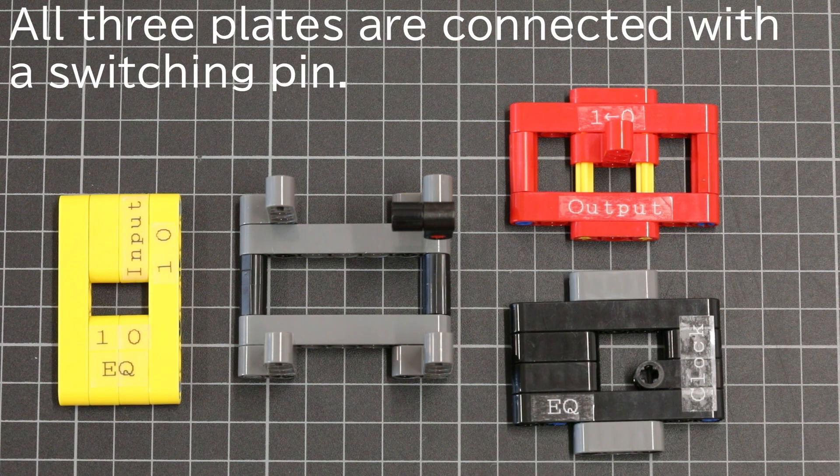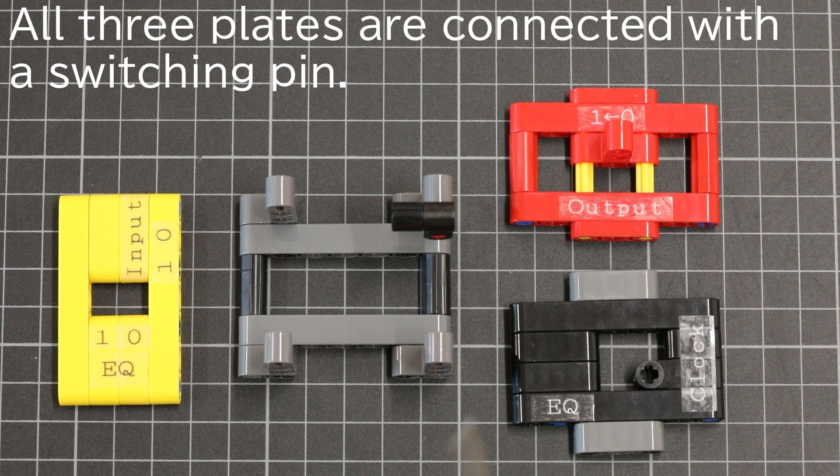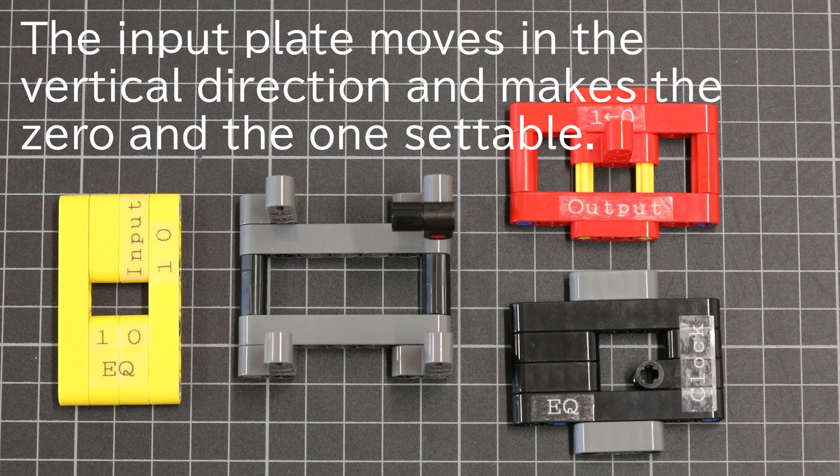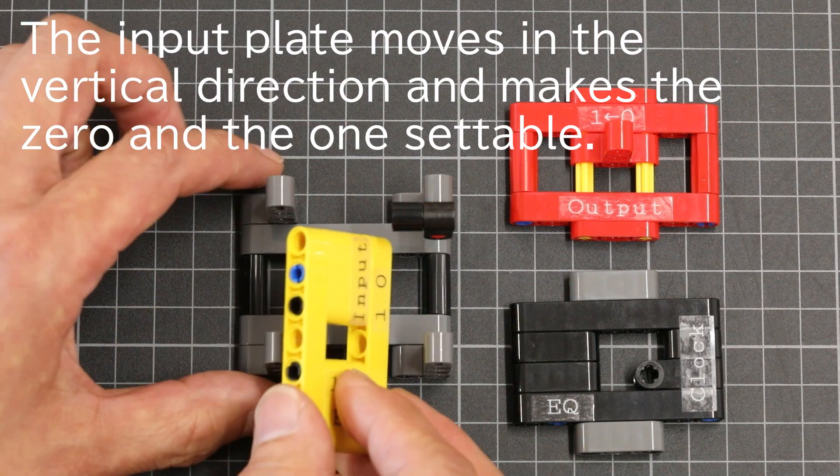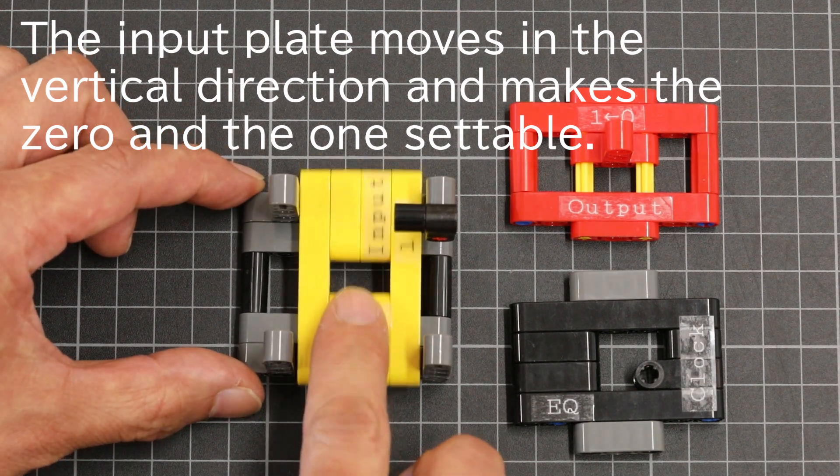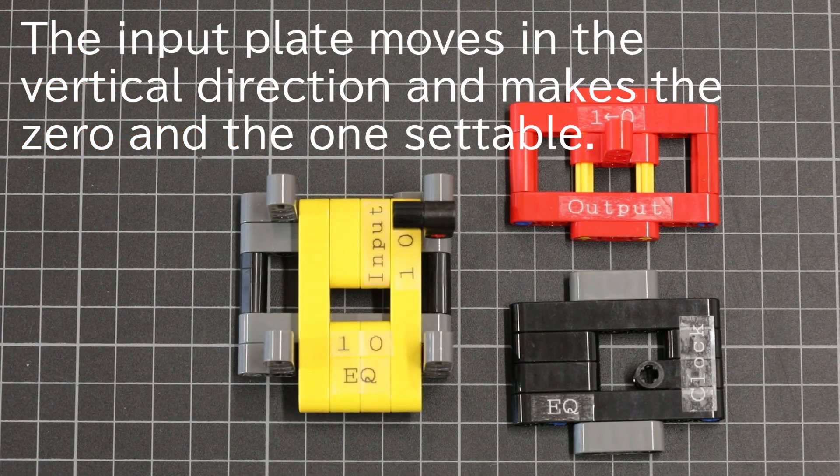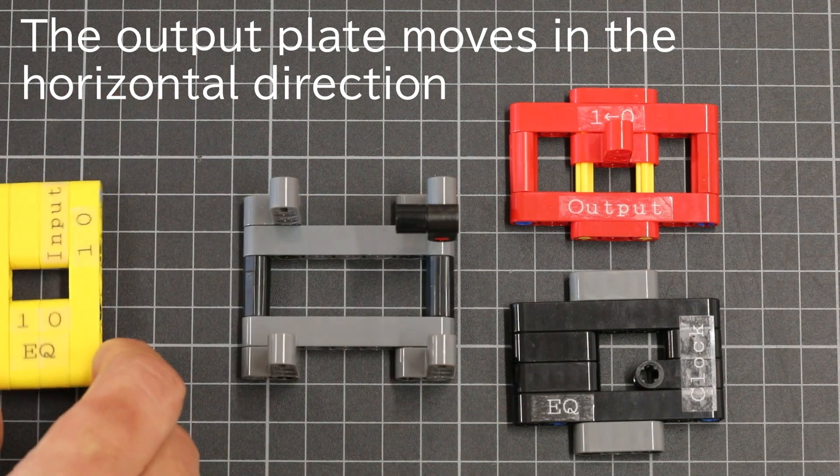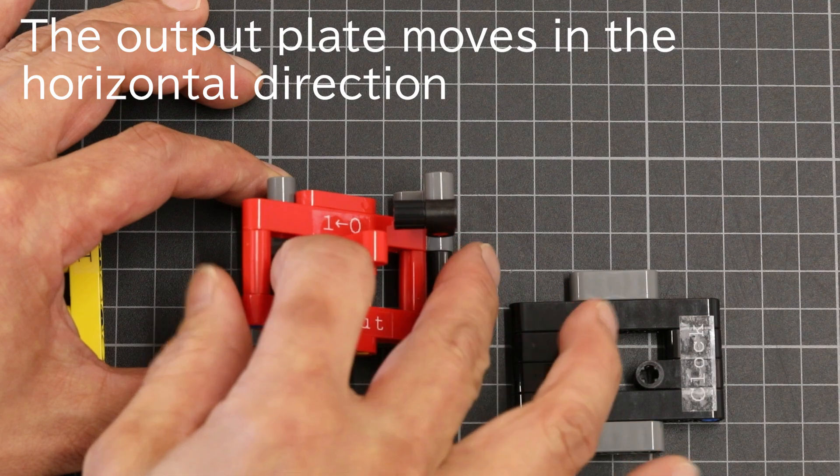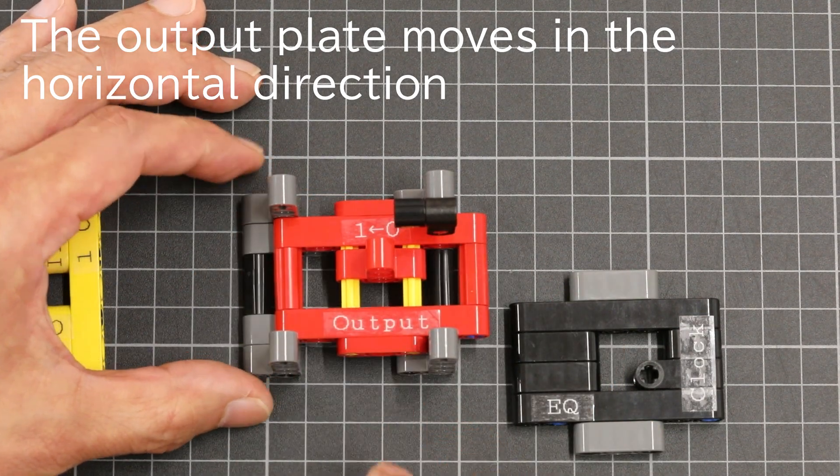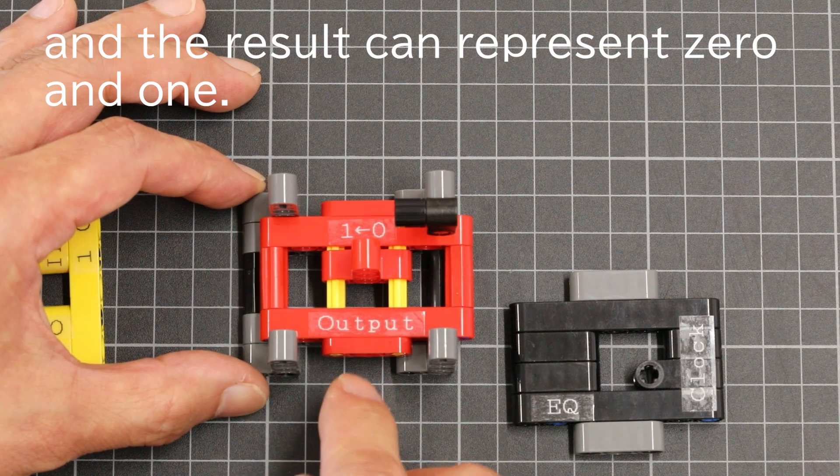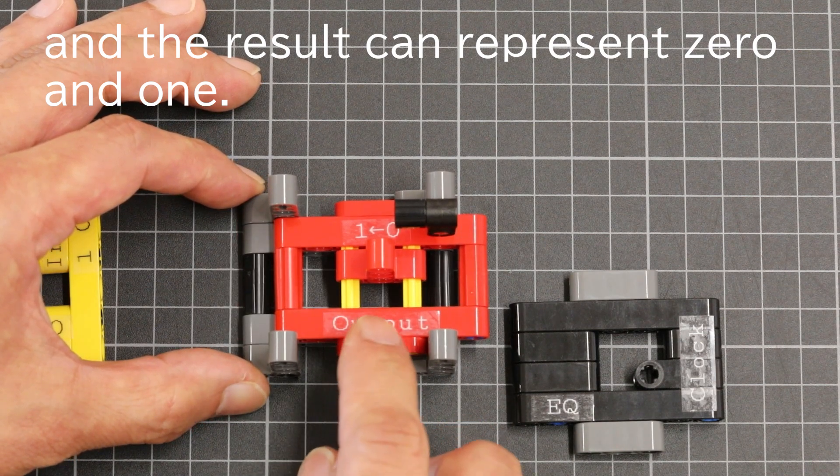All three plates are connected with a switching pin. The input plate moves in the vertical direction and makes the 0 and the 1 settable. The output plate moves in the horizontal direction and the result can represent 0 and 1.